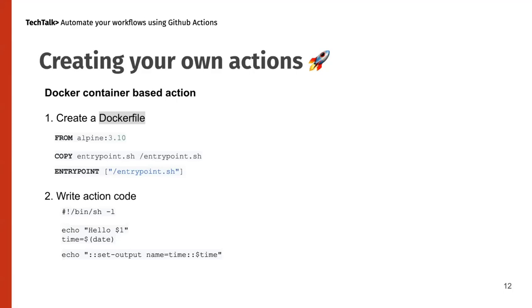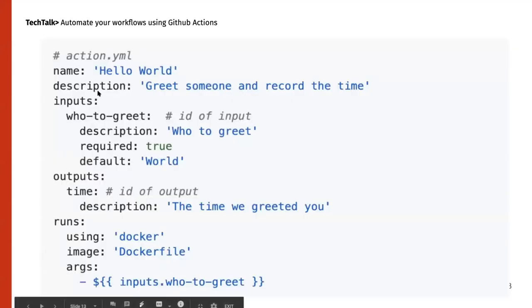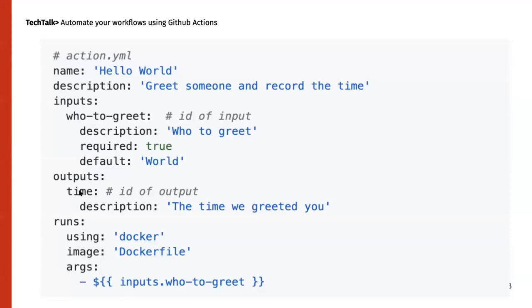You need to create an action metadata file — 'action.yml'. This file describes your GitHub Action. You give it a name, description, then specify inputs and outputs. These are used when someone uses your action — they provide inputs using the 'with' keyword. You can specify whether a field is required and provide a default value. You can also specify outputs that are emitted once the action completes. The 'runs' section tells GitHub Actions how this action is executed — for example, 'docker' with the image set to 'Dockerfile'.